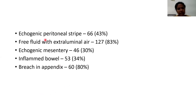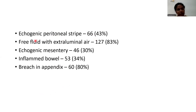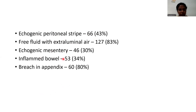The most common findings on ultrasound were: echogenic peritoneal stripe in 66 patients, free fluid with extraluminal air in 127 patients, echogenic mesentery in 46 patients, inflamed bowel in 53 patients, and breach in the appendix in 60 patients.